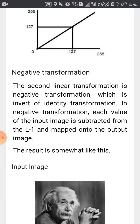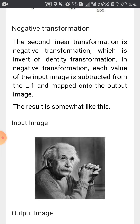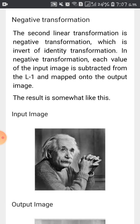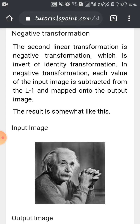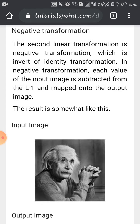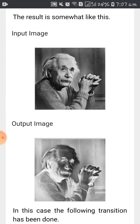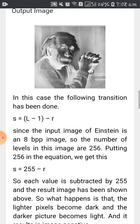The second type is negative transformation, where you invert the image. Previously we used to have photo films — when you take a photograph the image would always be in negative, and only when you develop that film do you get the original photograph. This negative transformation is one application of that. Here each value of the input image is subtracted from L-1 and mapped to the output image. You can see an example using a picture of Einstein showing the original and the inverted negative image.